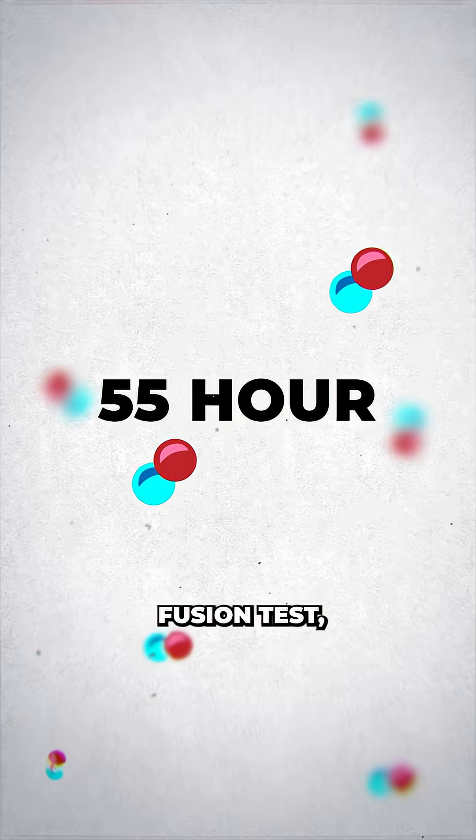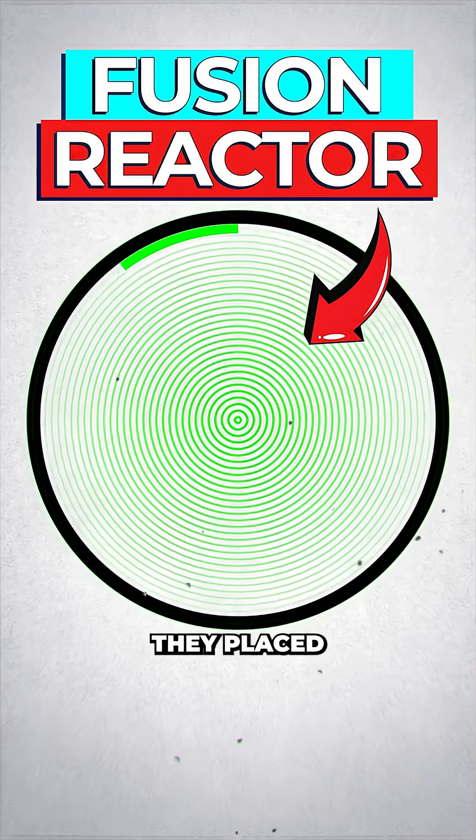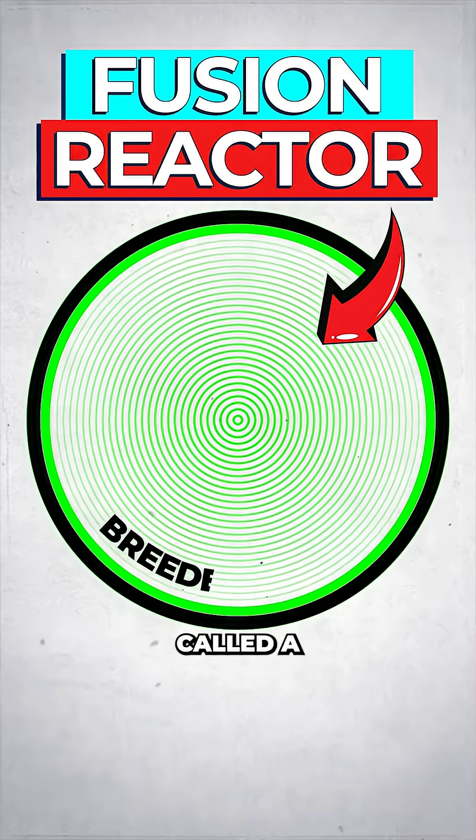The team ran a 55-hour deuterium-deuterium fusion test, a type of fusion reaction that doesn't need tritium at the start of it. Inside the reactor they placed a special lithium-containing device called a breeder blanket.